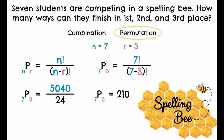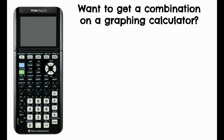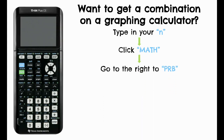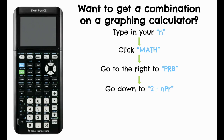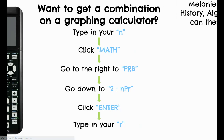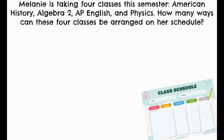Just like with combinations, we can do this on a graphing calculator using the exact same steps. Type in your n value, click math under the alpha button on the left-hand side, go right to PRB, go down to number two which is nPr — the permutation option — click enter, then type in your r value and hit enter. Just make sure you're choosing the correct function.